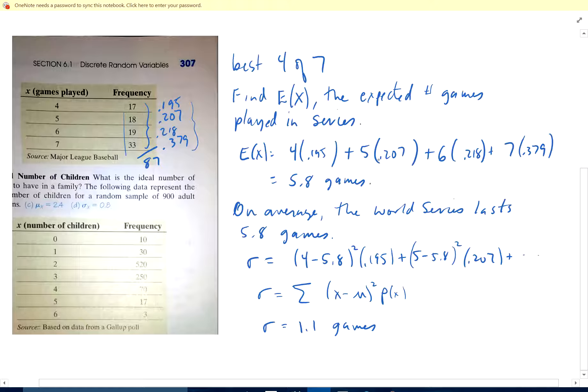It's 4 times the probability of that happening, 5 times the probability, and so forth. So you get 5.8 games on average. The World Series lasts 5.8 games. There's my interpretation of it.